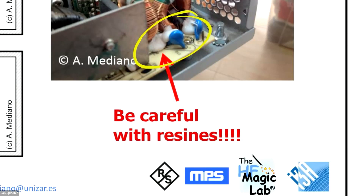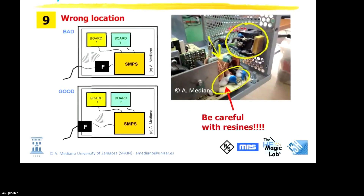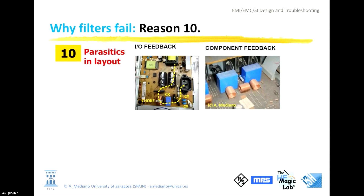An additional effect is that when you put the product in a thermal chamber, these materials can contract and change mechanical dimensions with heat and cold cycles. This mechanical stress can crack the core in some chokes. If you create a break in the core, the inductance disappears. Visually you see the component is in place, but there is no inductance. I have seen this twice in the past. Be careful about parasitics in the layout.